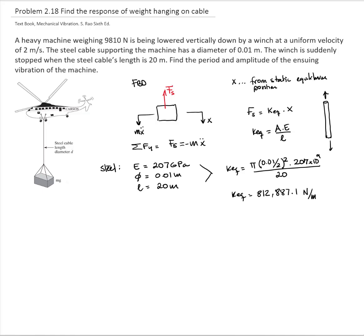We know that the weight of the machine is equal to 9,810 newtons. Therefore, the mass will be the weight divided by the gravity. It will be 9,810 divided by 9.81. Therefore, the mass is equal to 1,000 kilograms.